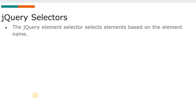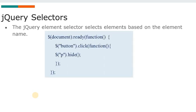jQuery selectors select elements based on the element name, as explained, but with more detail. The basic function structure is: dollar sign, selector, and method. Whenever document dot ready is called, this ready function will only be called when your document is fully loaded. Inside the ready function you can call methods on specific elements — for example, button dot click defines a function to be called when a button is clicked.